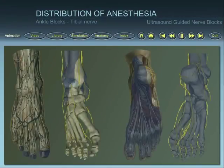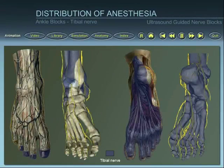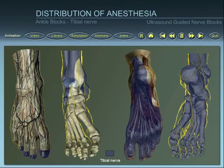The cutaneous distribution of anaesthesia extends to the plantar area of the foot. The bone distribution covers all the osseous structures of the foot and toes, excluding part of the medial malleolus.